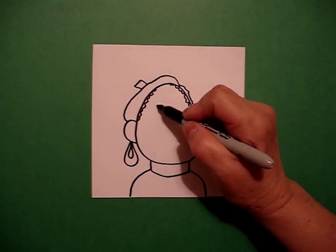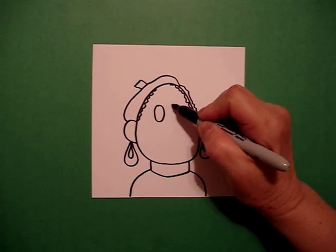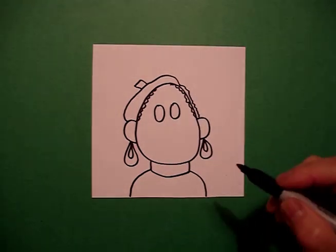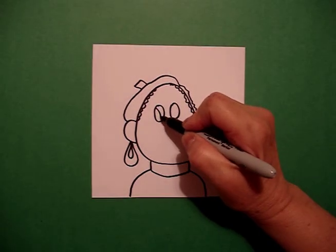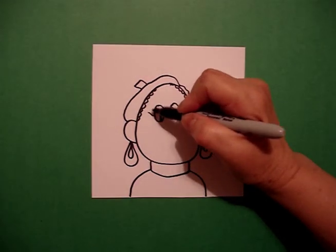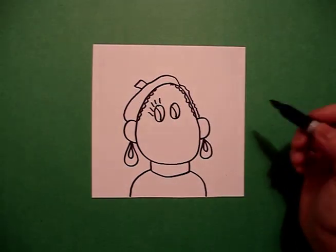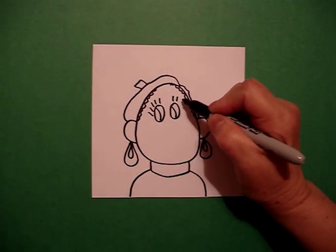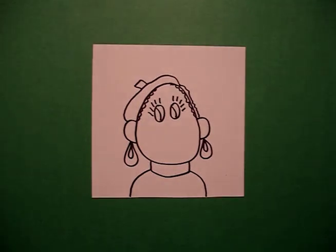Now I come to my eyes and I'm going to draw one, two ovals. I'm going to put a little curved line inside, and one, two, three, four, five straight lines for eyelashes on each eye.